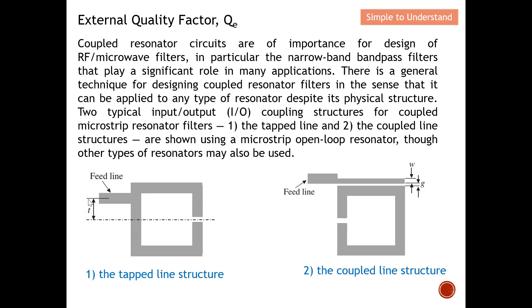There are two typical input and output coupling structures. For example, this will be the input; since the filter is symmetric, there will be another on the right-hand side as the output. When we mention the external quality factor, it applies to the input or output coupling structure of the whole microstrip resonator filter. The first type is the tap line, where the feeding line is directly connected to the resonator. The second type is the coupled line structure, where the feed line couples to the resonator through a gap.